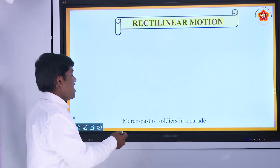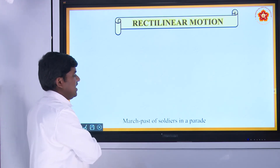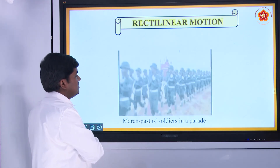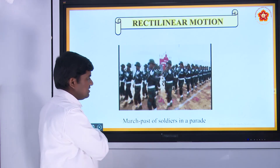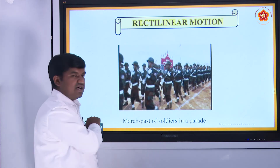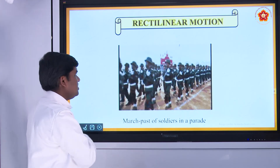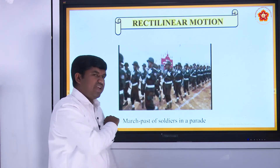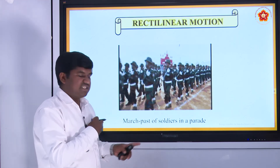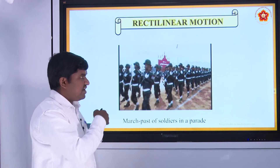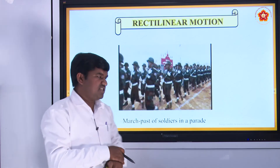March past of soldiers in a parade — see here, soldiers are moving in a straight line, so this is also rectilinear motion. In the same way, a policeman also does march past — that is also in a straight line, that is also rectilinear motion.